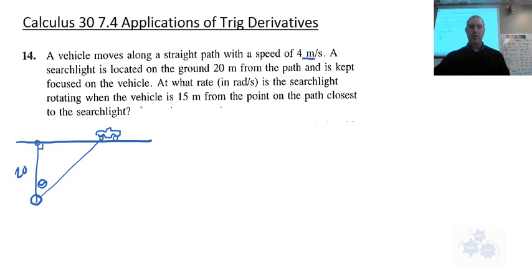Okay, so let's write down some givens here. So the speed of the vehicle, let's say this is x here, this distance that the car is from the nearest point. So x prime is 4 meters per second. We've got 20 labeled down here. We're looking for theta prime. We don't know what that is. And we're looking for at a point where x equals 15. Okay? How many of you got that far?